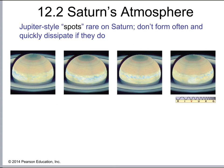We also saw the Great Red Spot on Jupiter and other storms that were shorter-lived. We see similar features on Saturn — not something like the Great Red Spot, which has endured for centuries, but those same kinds of storms that come and go. So Saturn is another planet that has weather for scientists to try to understand.